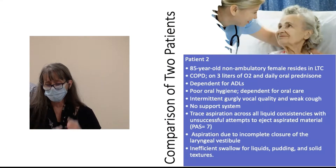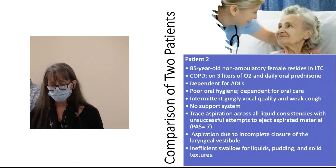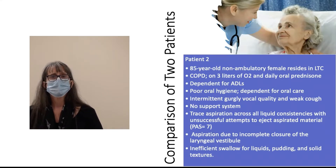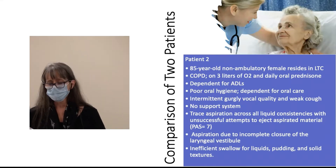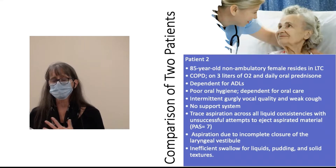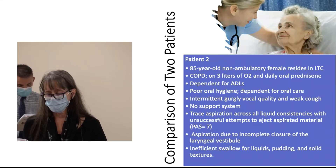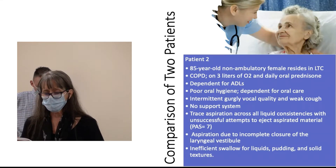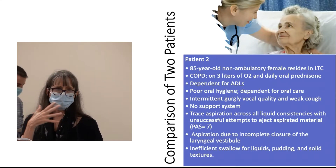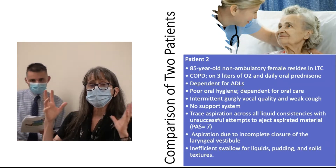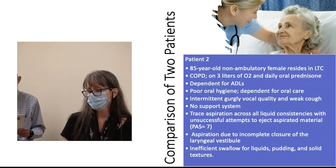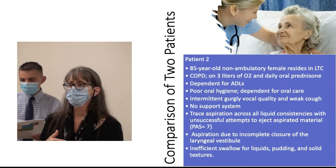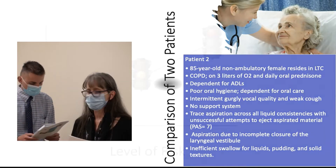We're going to compare this gentleman to an 85-year-old non-ambulatory female who resides in a long-term care facility. She has pretty significant COPD requiring oxygen and daily oral prednisone. She's dependent for all activities of daily living, has a history of poor oral hygiene, and is dependent on others to perform her oral care. We note intermittent gurgly vocal quality and a weak cough, and she has no support system except for the staff at the long-term care facility. In the video of Flora, we see trace aspiration across all liquid consistencies. She attempts to eject but those attempts are unsuccessful — a PAS score of 7. The aspiration is due to incomplete closure of the laryngeal vestibule, and we see a lot of inefficiencies throughout the system on all textures, meaning lots of residue after the swallows.